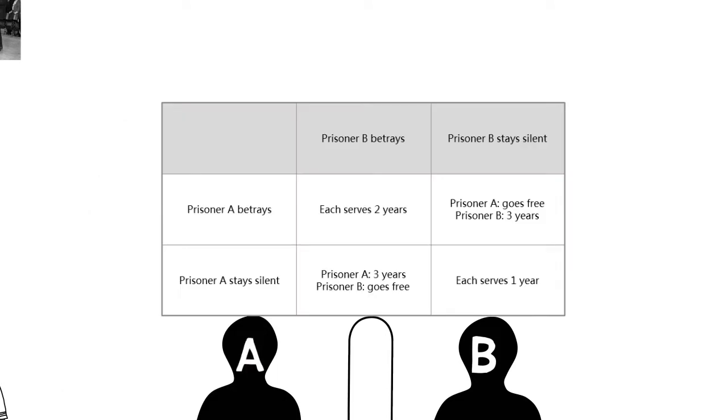If A and B each betray the other, each of them serves two years in prison. If A betrays B but B remains silent, A will be set free and B will serve three years in prison, and vice versa. If A and B both remain silent, both of them will serve one year in prison.